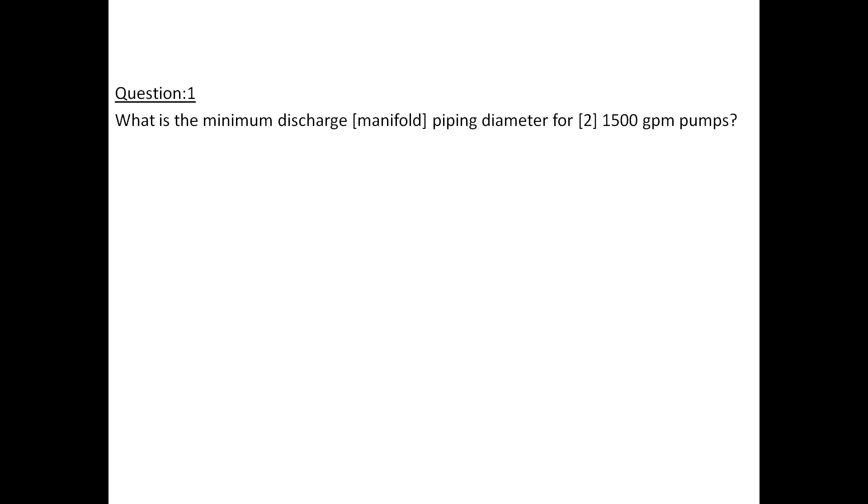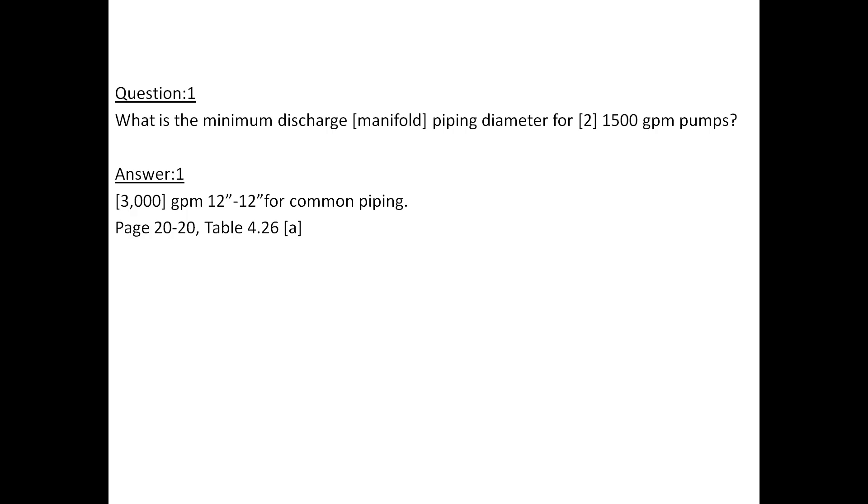Question number 1: What is the minimum discharge piping diameter for two 1500 gallons per minute pumps? Answer number 1 is 3000 gallons, 12 inch by 12 inch for common piping. Refer to page 20-20, table 4.26A.